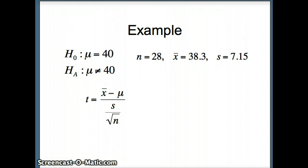We have our test statistic t, which is x̄ minus μ divided by s over the square root of n. Plugging our numbers in: x̄ 38.3 minus μ, what we assume in H₀, divided by s, 7.15, over root n, over root 28.